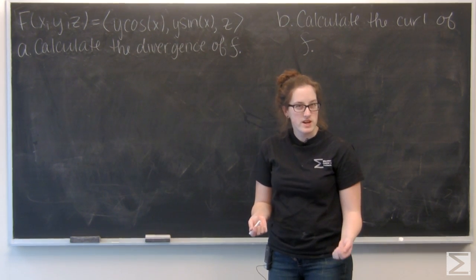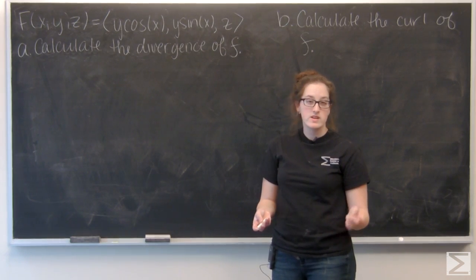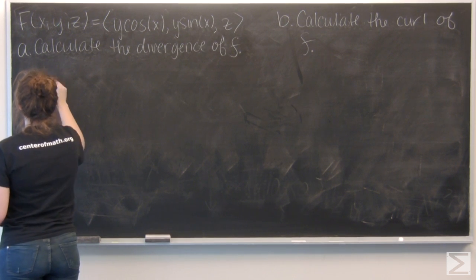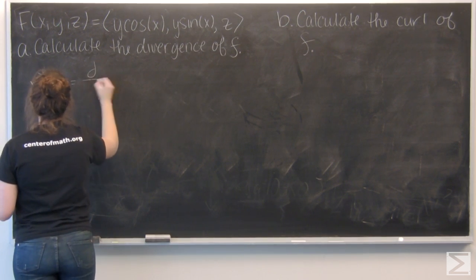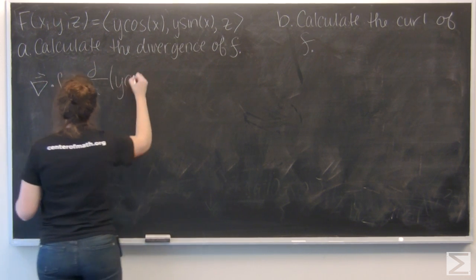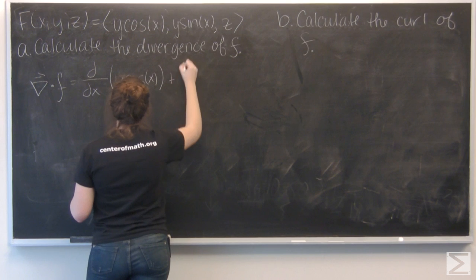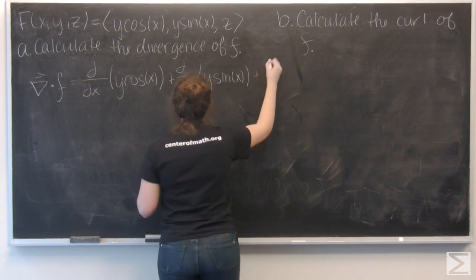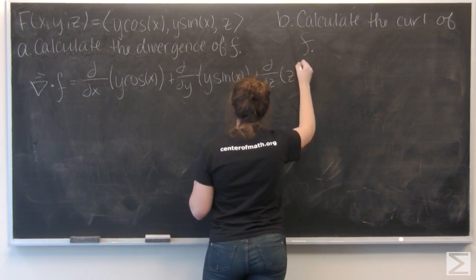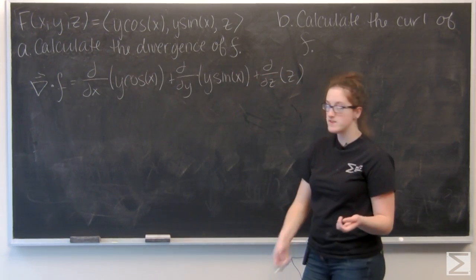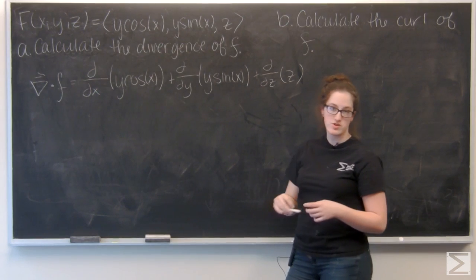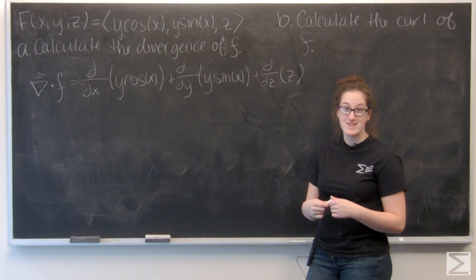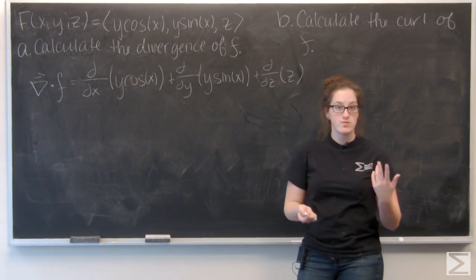Let's recall what exactly the divergence is. It's the gradient dot f — the partial derivative with respect to x of the i component, plus the partial derivative with respect to y of the j component, plus the partial derivative with respect to z of the k component. So let's go ahead and calculate these.